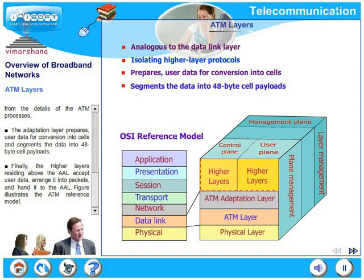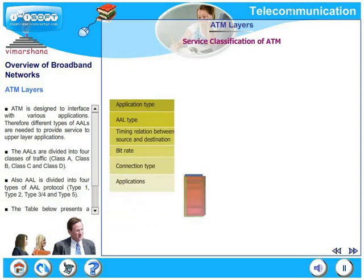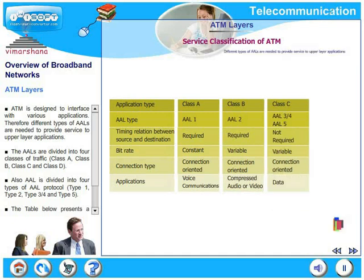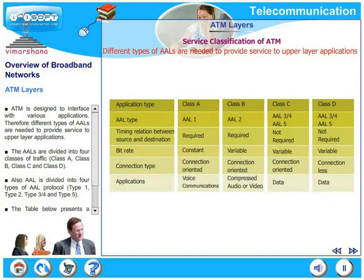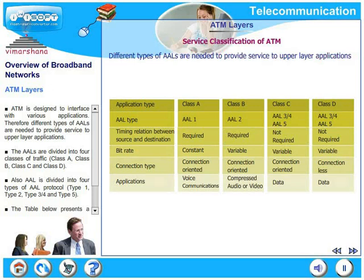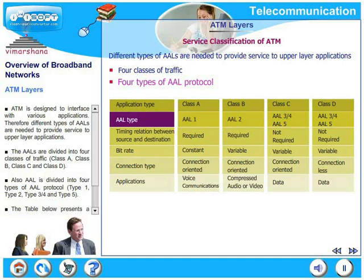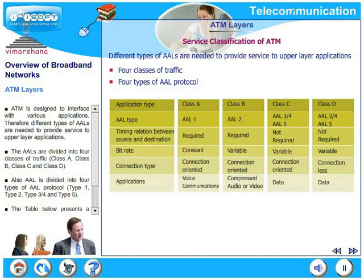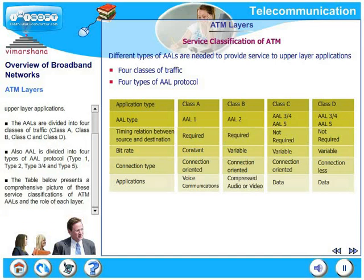This figure illustrates the ATM reference model. ATM is designed to interface with various applications; therefore, different types of AALs are needed to provide service to the upper layer applications. The AALs are divided into four classes of traffic: class A, class B, class C, and class D. Also, AAL is divided into four types of AAL protocol: type 1, type 2, type 3/4, and type 5. The table below represents a comprehensive picture of the service classifications of ATM AALs and the role of each of these layers.